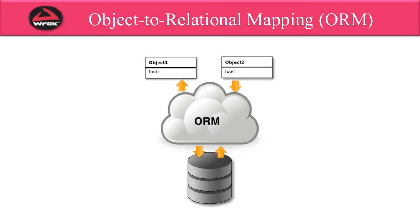With JPA, you make use of object-to-relational mappings. You take your Java classes and you map them to the appropriate tables on the database. Then, instead of writing the low-level SQL, all you do is you create your objects, make use of JPA, and tell JPA to simply save your object. The ORM layer in the middle handles mapping your Java classes to the appropriate database tables, making it really easy to perform database persistence with Java.